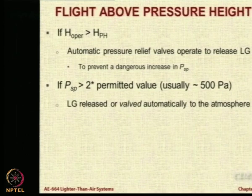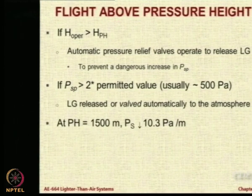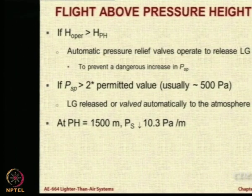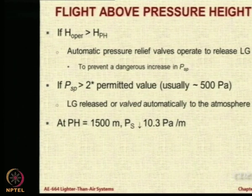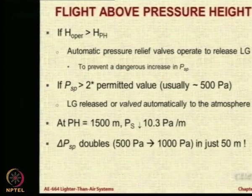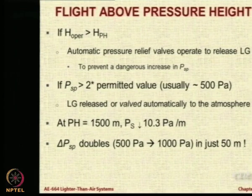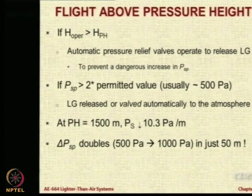If you are operating at a pressure height of 1500 meters, per meter of altitude the pressure changes by 10.3 pascals, and you can only go up to 1000 pascals. So what it means is that in 50 meters the pressure will double from 500 to 1000 pascals. Within 50 meters of delta h the valve will open. So you might be able to fly only about 50 meters higher than the pressure altitude before the gas is vented out to reduce the envelope pressure.